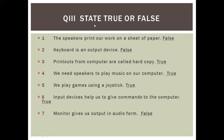Question three: state true or false. Number one: the speakers print our work on a sheet of paper — the answer is false. Underline the word false. Then leave a line. Second one: keyboard is an output device — false. Number three: printouts from the computer are called hard copy — the answer is true.